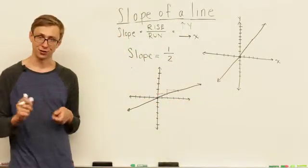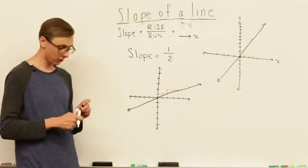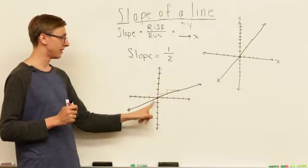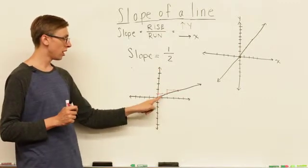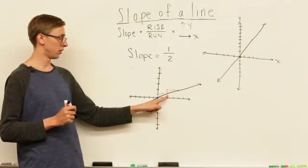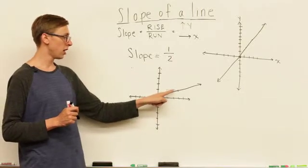I hope your answer looked like this. So as you can see here, the slope of 1 half means that I went up 1 and then over 2. Again, I went up 1 and over 2.